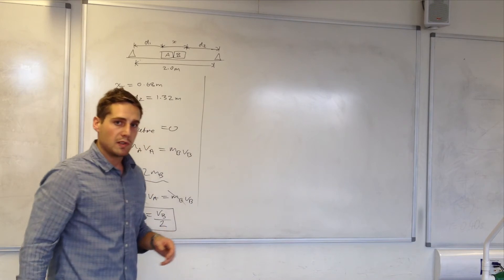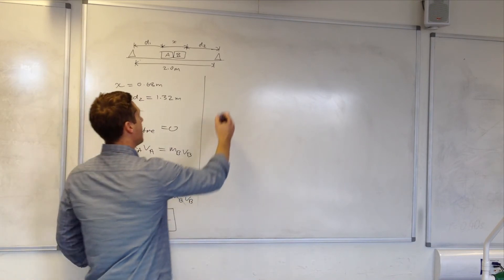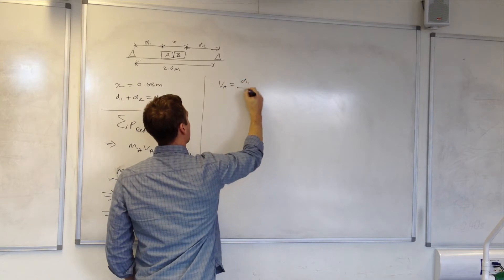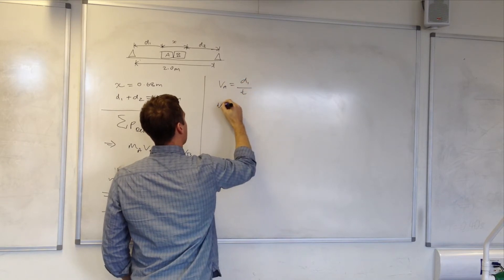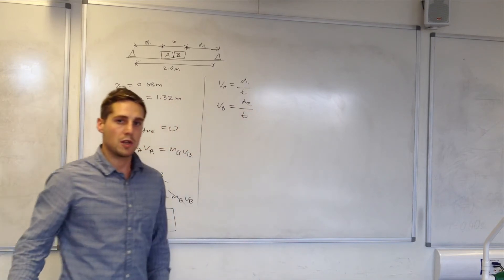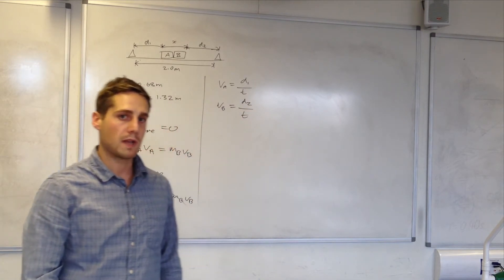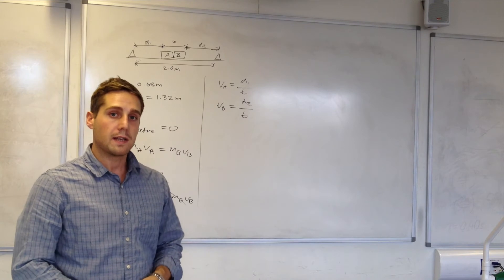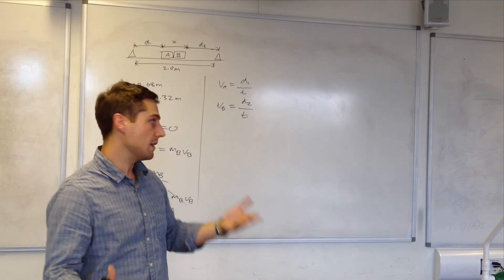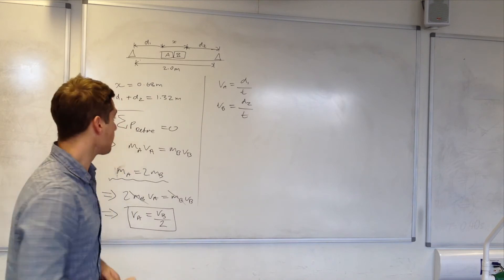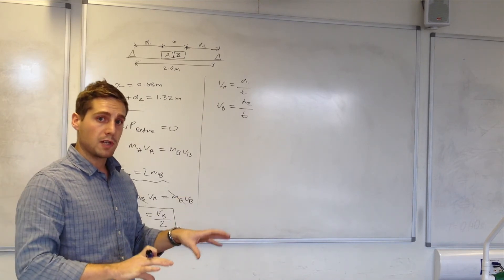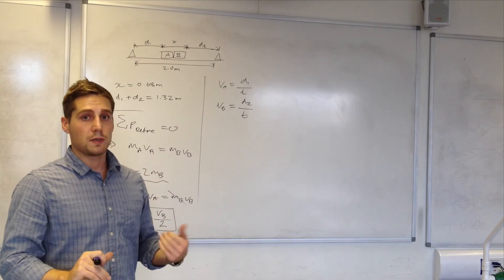That means we can use the constant velocity equation. So VA would equal D1 over time, and VB equals D2 over T. You notice I use the same time in both cases. The reason for that is that we want them to hit the stops at the same time so T is equal in both cases. I can rearrange those equations to make T the subject and that means both equations will be equal to each other.